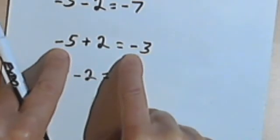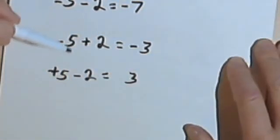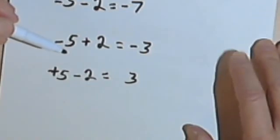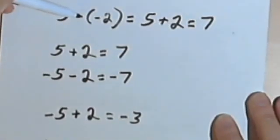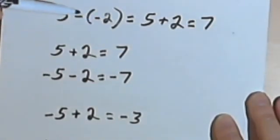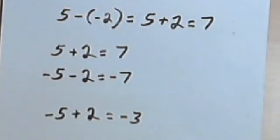Practice this and get plenty of exercises so you can do it automatically. Make sure it makes sense. And don't forget about two negatives in a row becoming a positive. Get plenty of practice. Take care.